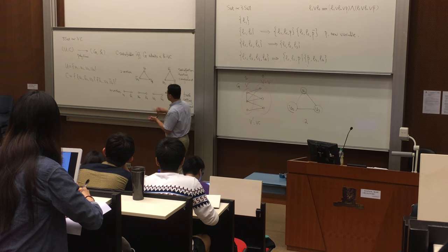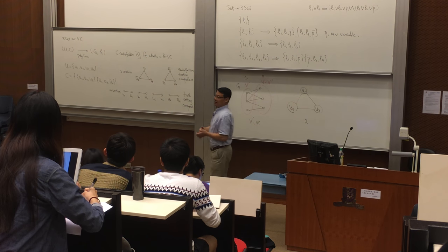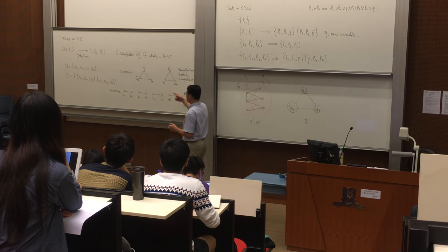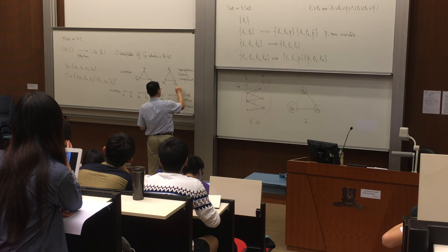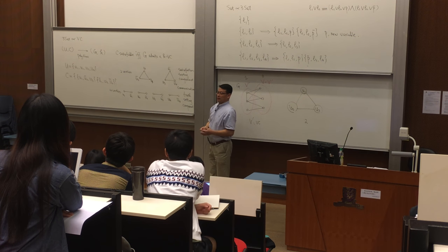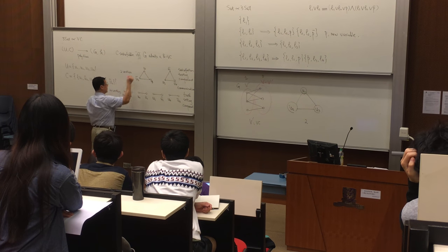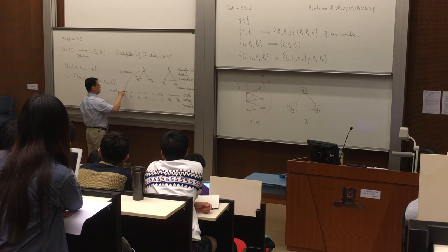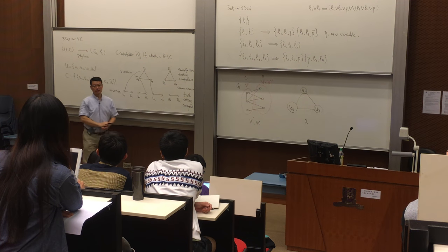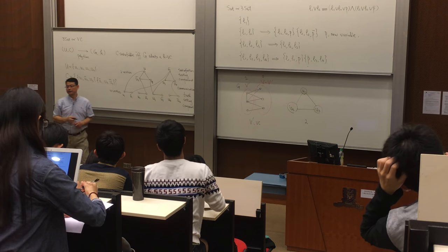Now, the same variable appearing in both components must have some relation. To indicate they are related, we add some edges — communication edges between the choose-setting part and the clause part. If the label is the same, I add an edge. That's the construction of graph G.